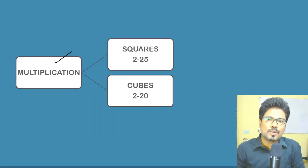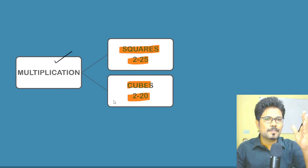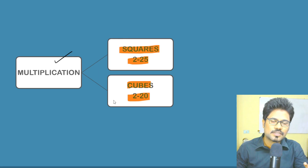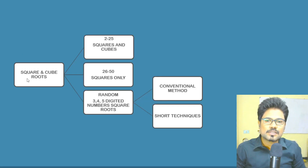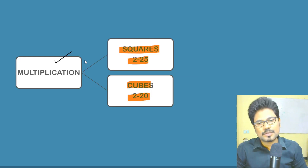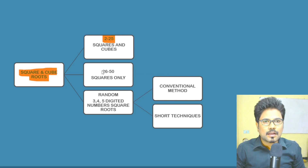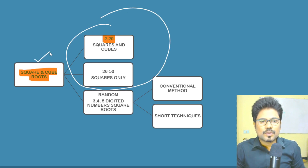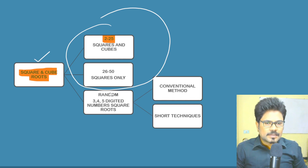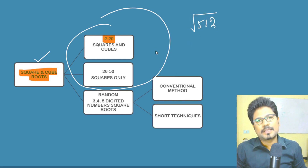Next — squares, 2 to 25 minimum; cubes, 2 to 20. Make a chart on an A4 sheet and stick it on the wall in front of you. If you are staying in a hostel or study room, make a maths notes with these on the first and second pages. Next, squares and square roots, and cube roots — squares and cubes from 2 to 25. For example, 512 — squares and square root.